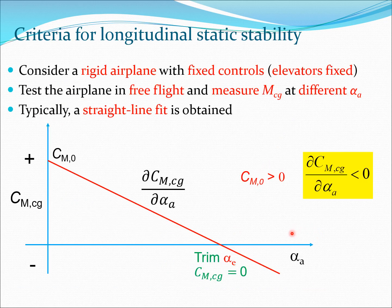Now let us think about longitudinal static stability. Consider a rigid airplane with fixed controls — meaning the elevators are fixed — and we are only dealing with pitching motion. We test this airplane in free flight and measure CMCG at different alpha_A values. The data shows a linear variation, giving a straight-line fit. This is the plot of CMCG versus alpha_A, where CMCG is the pitching moment coefficient about the center of gravity of the aircraft.